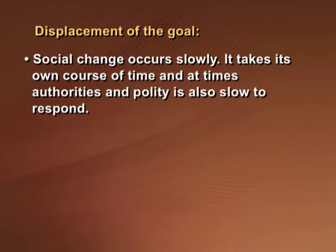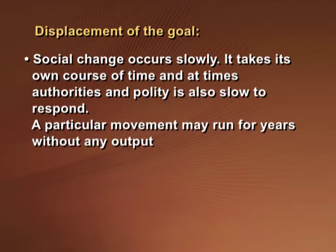The third possible end is displacement of goal. Social changes occur slowly and authorities are often slow to respond to the demands of the people. A particular movement may run for years without any output, making it difficult to maintain initial enthusiasm and morale among members. If results take time to come, members may tend to lose focus and patience, and some may start abandoning the cause altogether. Displacement of goal occurs when the movement concentrates more on maintaining its organizational setup — formal rationality — rather than the cause it originally intended to focus upon.